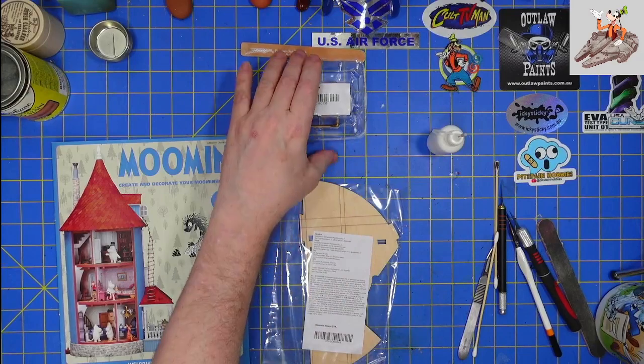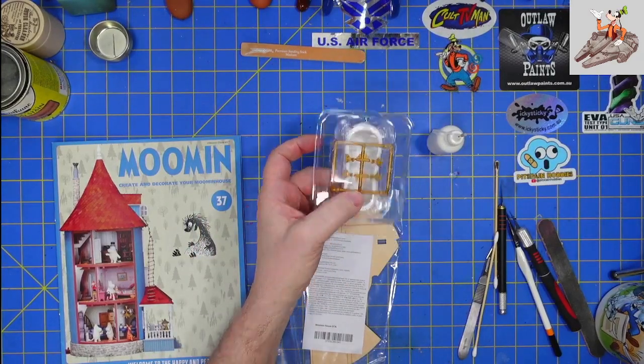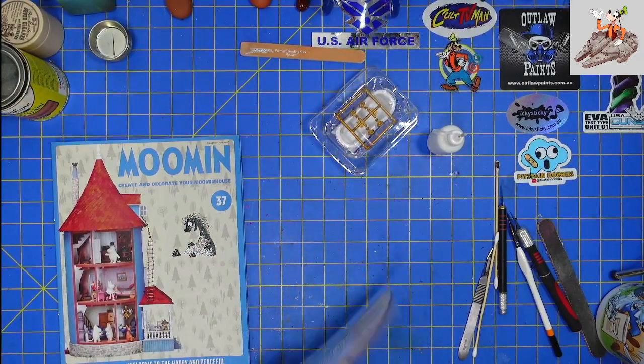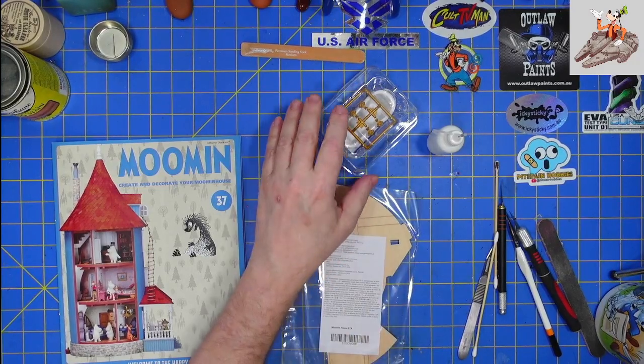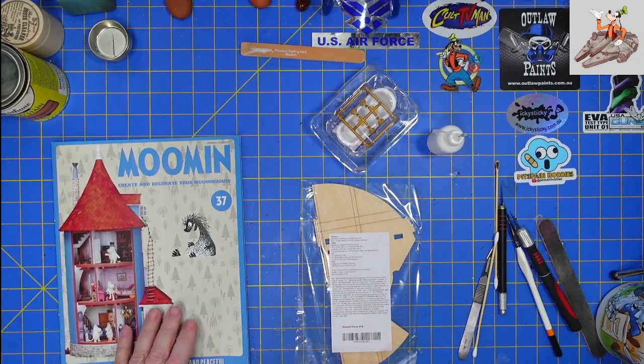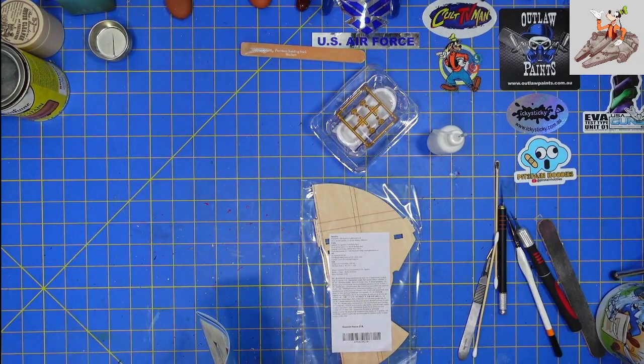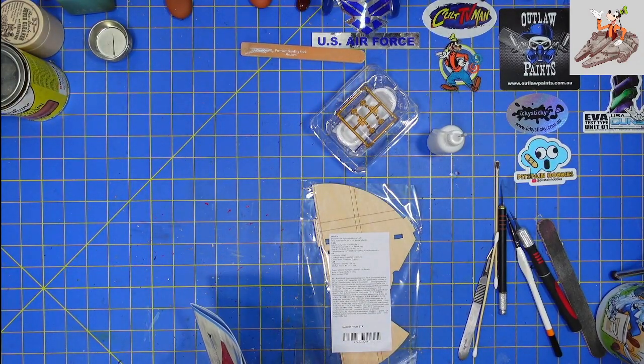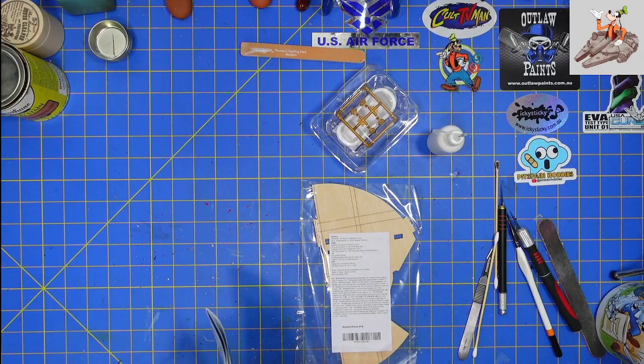What we've got from the parts is the second piece of the first floor ceiling and the bathtub. So let me go ahead and get the book open and we will start working on this pack.